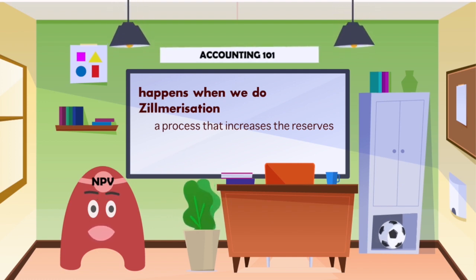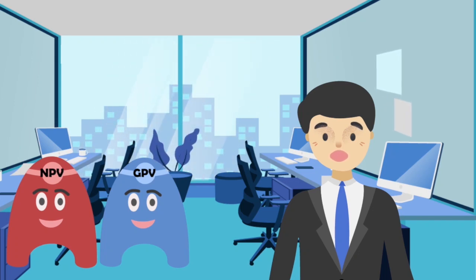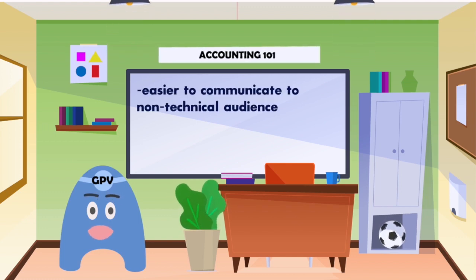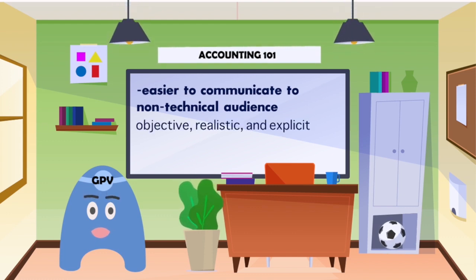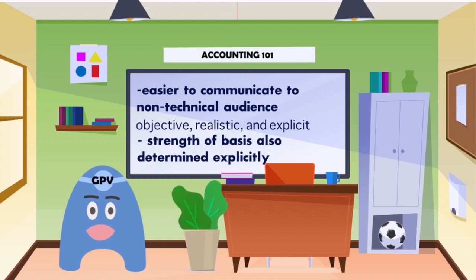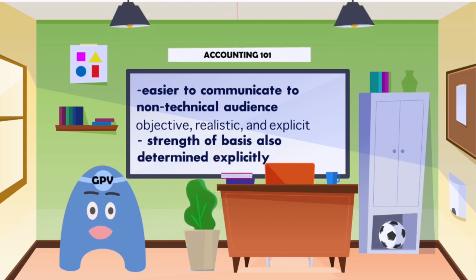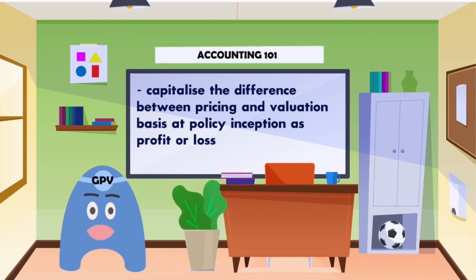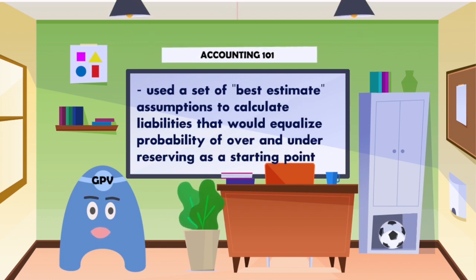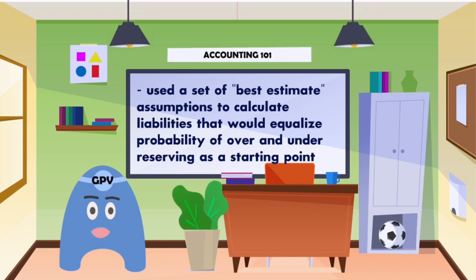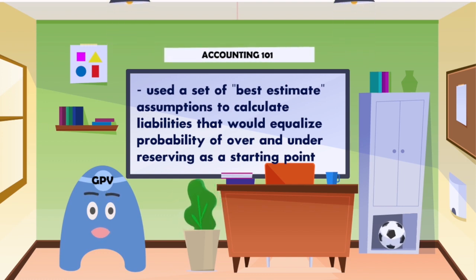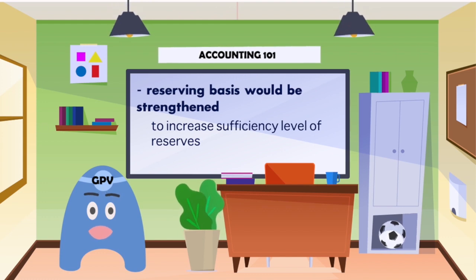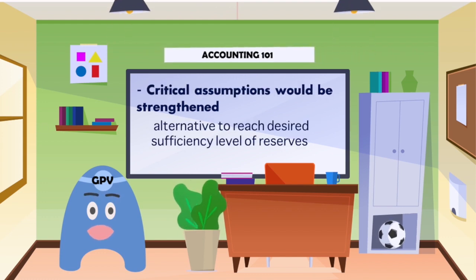Now it's time for GPV. First of all, the GPV method is easier to communicate to a non-technical audience. All future cash flows can be modeled — therefore, GPV method is objective, realistic, and explicit. The strength of the basis is also determined explicitly through the strength of individual assumptions. GPV method capitalizes the difference between pricing and valuation basis at policy inception as profit or loss. Moreover, GPV uses a set of best estimate assumptions to calculate liabilities, with equal probability of over- and under-reserving as a starting point. The reserving basis would be strengthened in order to increase the sufficiency level of reserves, and critical assumptions would be strengthened as an alternative to reach the desired sufficient level. Actual real judgment and extensive testing are also required to use GPV properly.